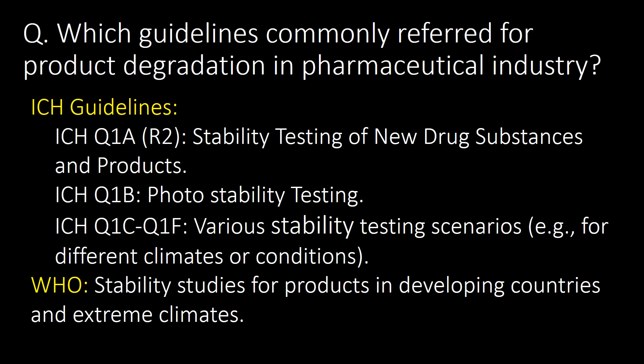Which guidelines are commonly referred to for product degradation in the pharmaceutical industry? ICH guidelines including ICH Q1A-R2 (stability testing of new drug substances and products), ICH Q1B (photo stability testing), ICH Q1C and Q1F (for various stability testing scenarios), and WHO guidelines for stability studies for products in developing countries and extreme climates are the commonly referred guidelines.